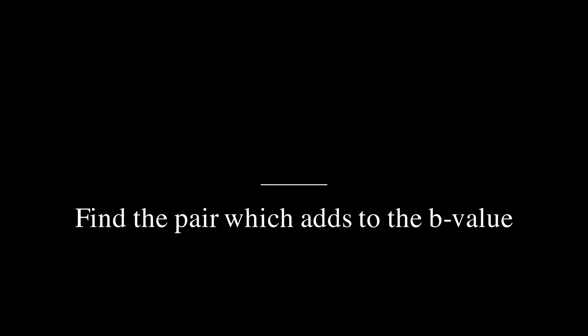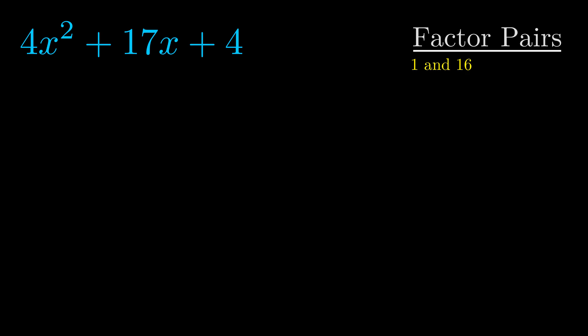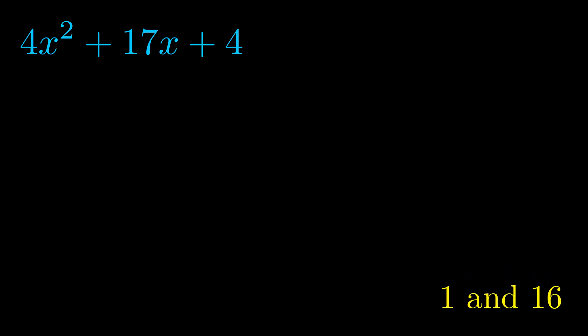The b value is the coefficient on the x term — that's the middle term, the one that we haven't done anything with yet. And really this is the only factor pair that we need. Now once we have this factor pair, what we want to do is use it to split up the b value.